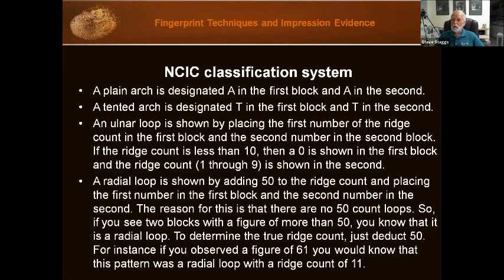An ulnar loop is shown by placing the first digit of the ridge count in the first block and the second digit in the second block. So if it's a count of 12, you have '1' and '2' in the two blocks. If the ridge count is less than 10, you start with a zero — so it would be '06', '07', whatever. If the finger is a radial loop, you add 50 to the ridge count and place that number in the two boxes. This tells you it's a radial loop instead of an ulnar loop.